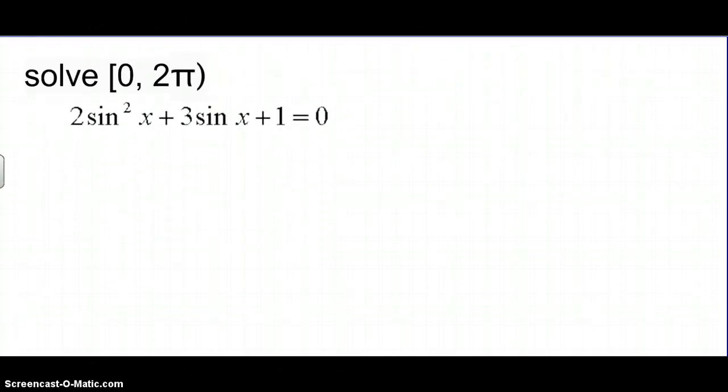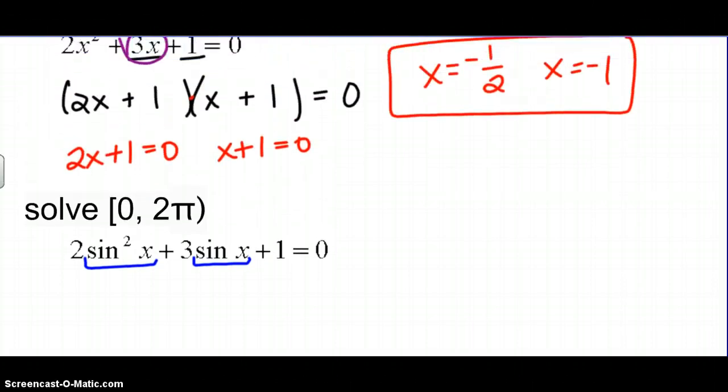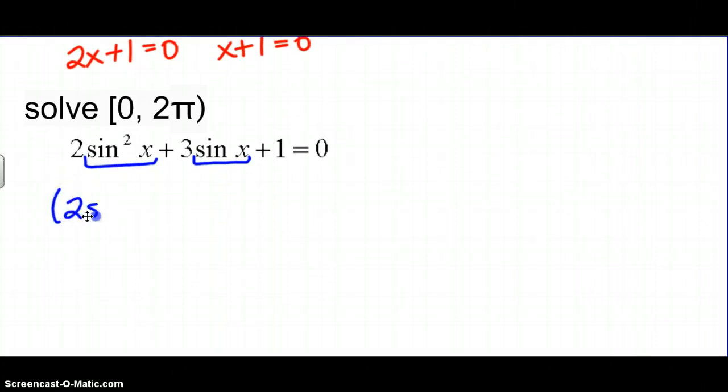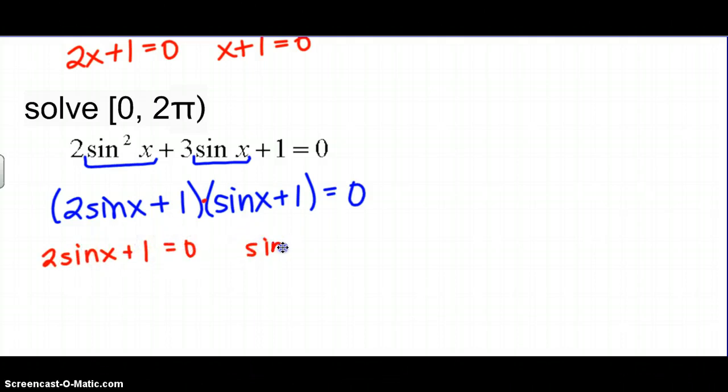So, just like we've been doing, solve between zero and two pi, making that connection from algebra to trigonometry. I'm going to look at sine here as being similar to my x that I had here. So instead of factoring into 2x plus one, I'm going to factor into 2 sin of x plus one, times sin of x plus one is all equal to zero. Two things multiplied together. Either the first one is going to be zero, or the second one is going to be equal to zero, which means that sine of x is going to be equal to negative a half, or sine of x is going to be equal to negative one.